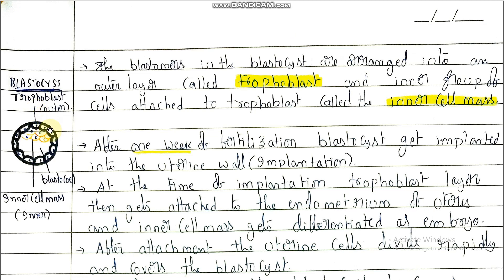This is the structure of the blastocyst. The blastocyst differentiates into an outer region called trophoblast and an inner portion called the inner cell mass. The blastomeres in the blastocyst are arranged into an outer layer called trophoblast and an inner group of cells attached to the trophoblast cells called inner cell mass.